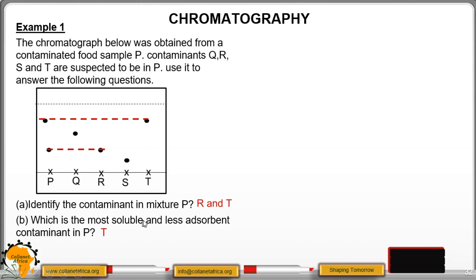Which is the most soluble and least adsorbent contaminant in P? Most soluble means it will move a large distance, being less adsorbent. It means this one will move the farthest. So in this case, T is the one that moved farthest from the baseline, moving the farthest distance. Therefore T is more soluble and less adsorbent to the filter paper or paper strip.